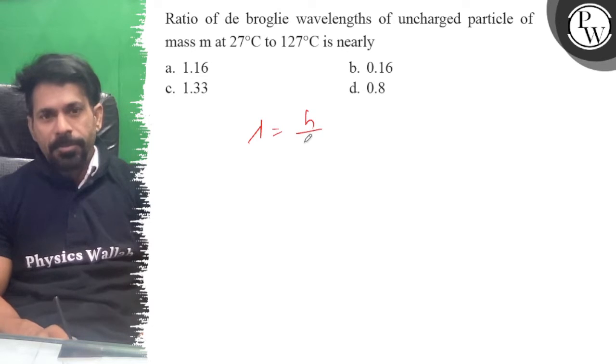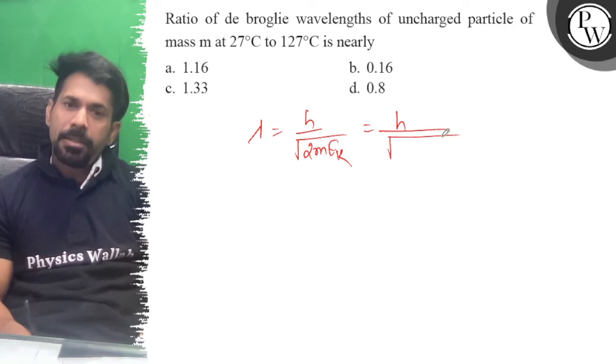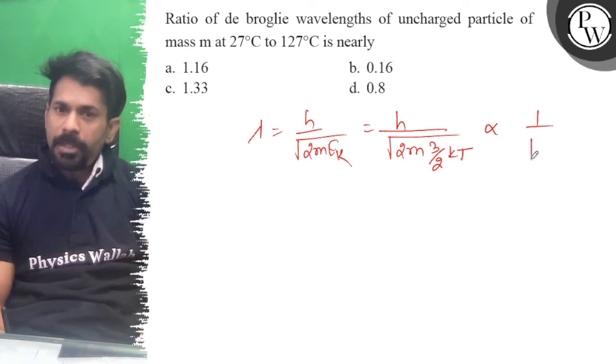Lambda is nothing but h by root of 2mEk, and Ek we can write as 3 by 2 of kT. So that means lambda is proportional to 1 by root temperature.